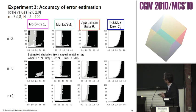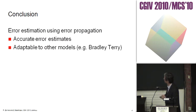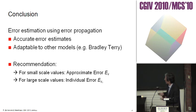In conclusion, error estimation using error propagation has two advantages: it's the most accurate, and it's adaptable to other models. If I use a logistic or other model, it can be derived in an analogous way. Recommendations: if I know I have small scale values, the approximate error estimation, either the one in the paper or the one by Mosteller, is acceptable. But for large scale values, we should go for individual error estimations. Thank you for your attention.